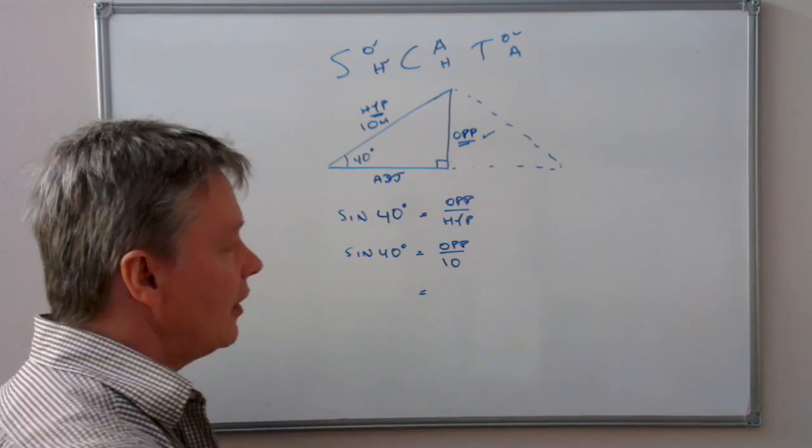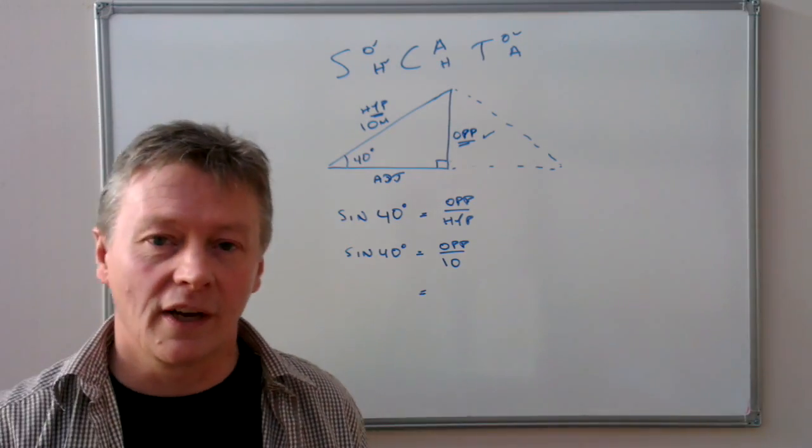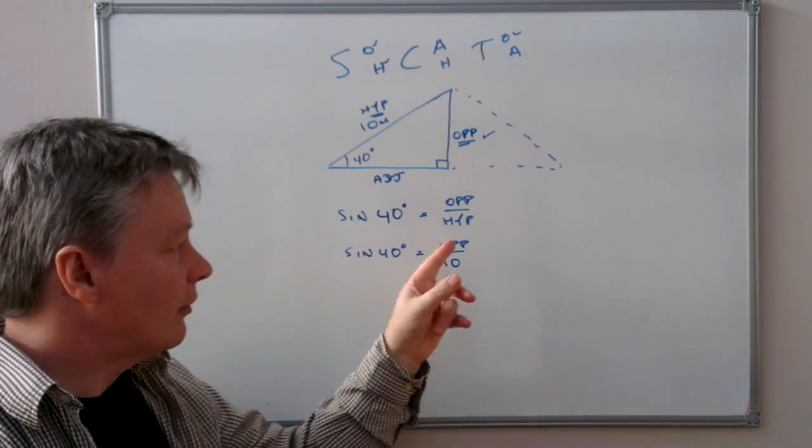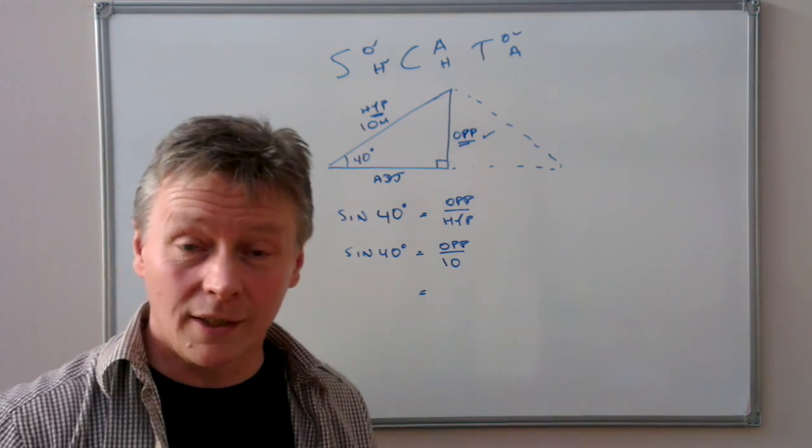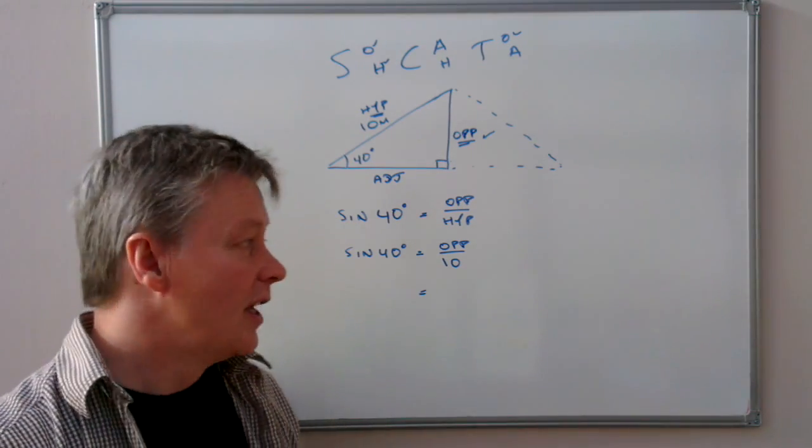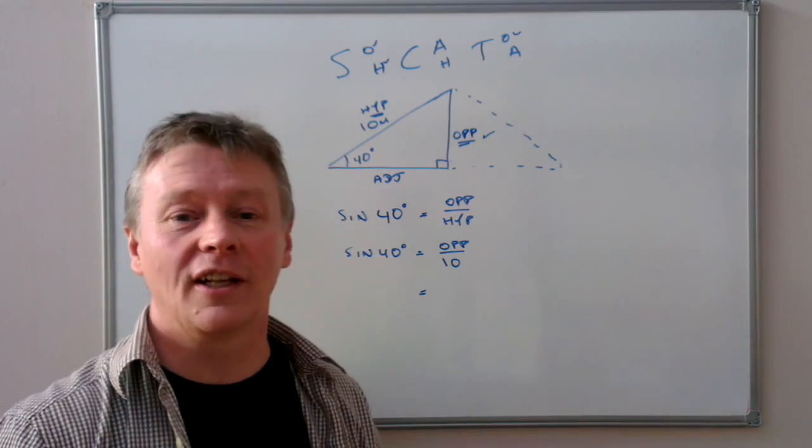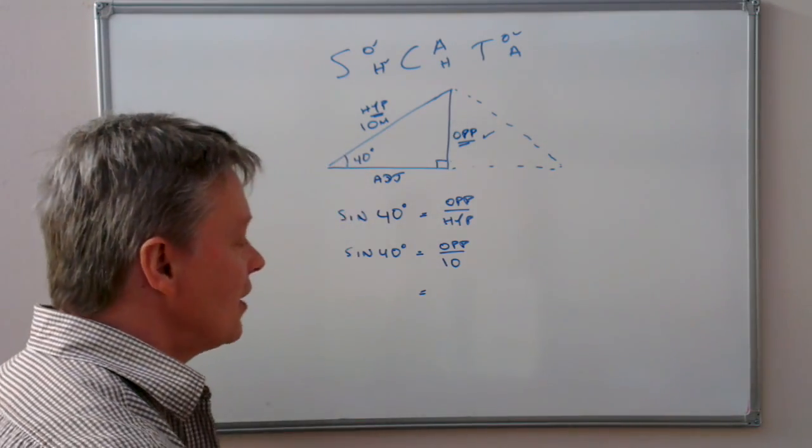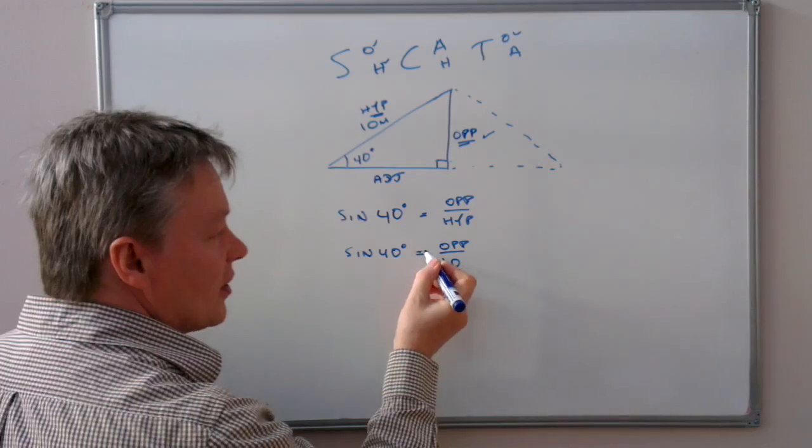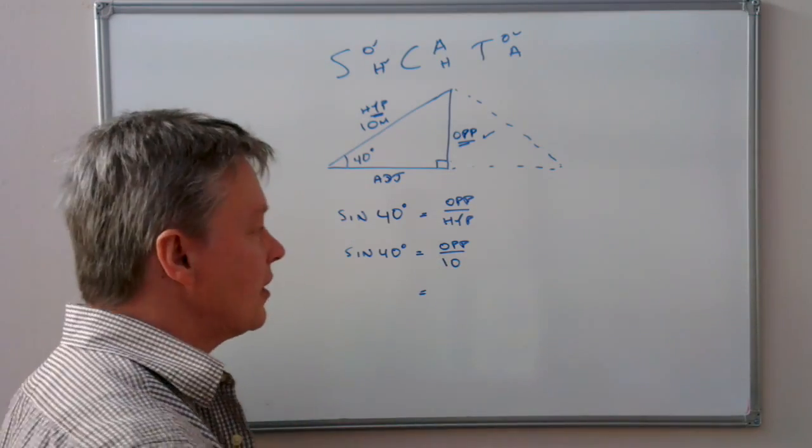So if you look at some of the other videos, you'll see that when you have a relationship like this, using a little bit of algebraic manipulation, it means we can isolate the opposite to one side and the calculation to the other. So what I'm going to do with this relationship is I'm going to multiply both sides by 10.